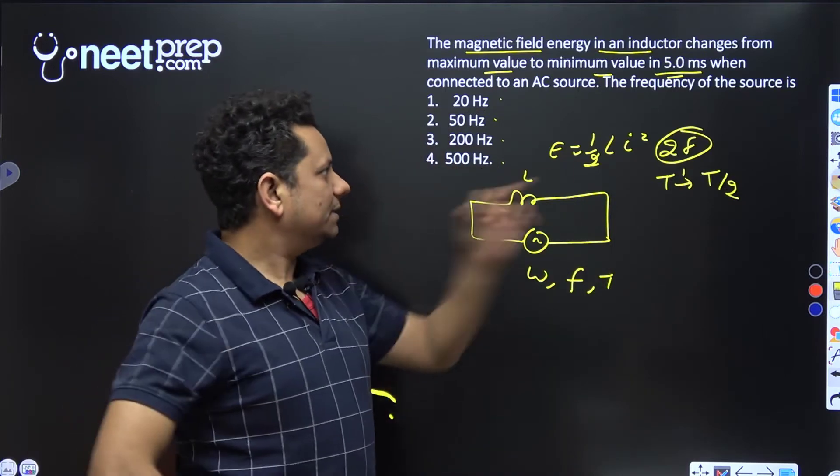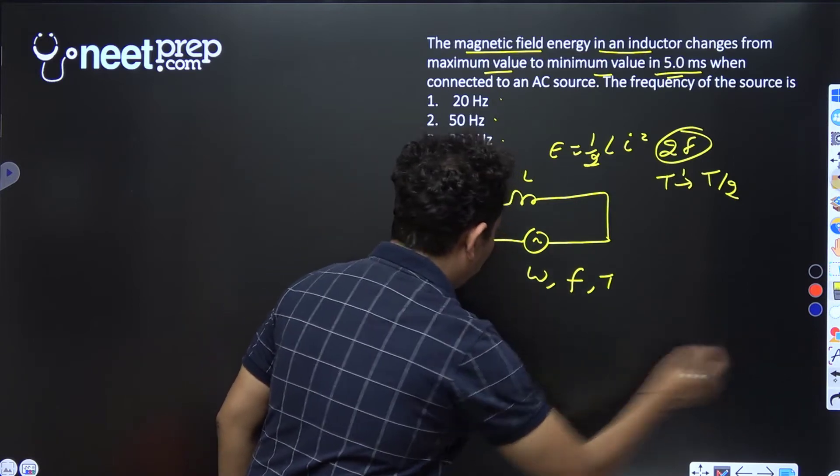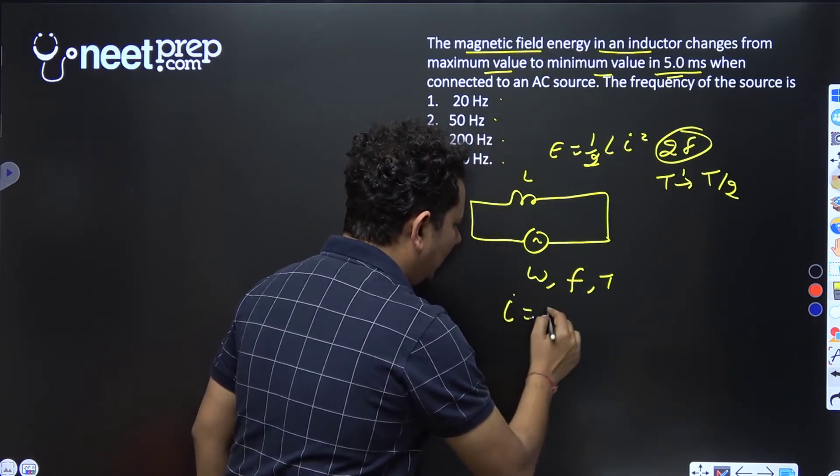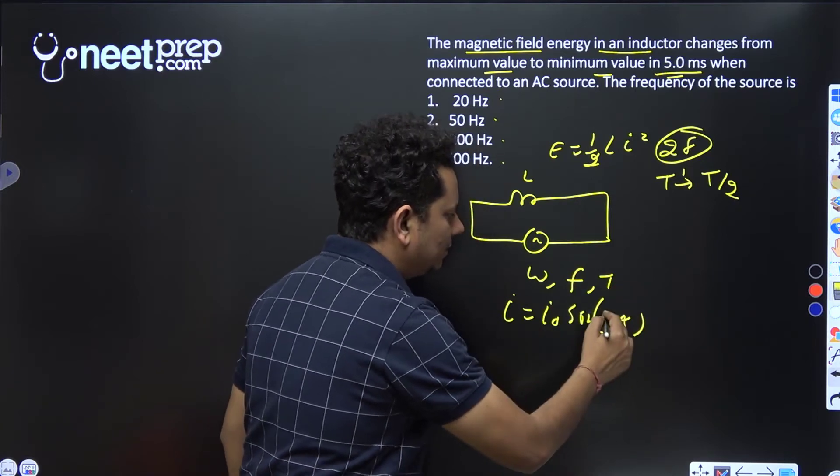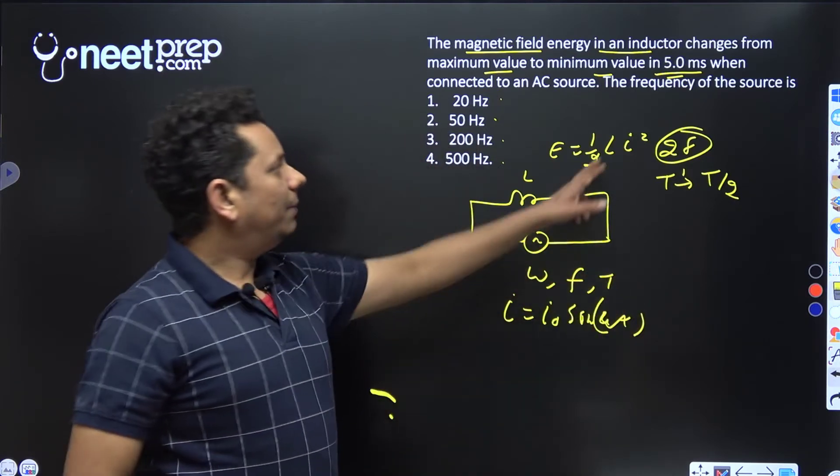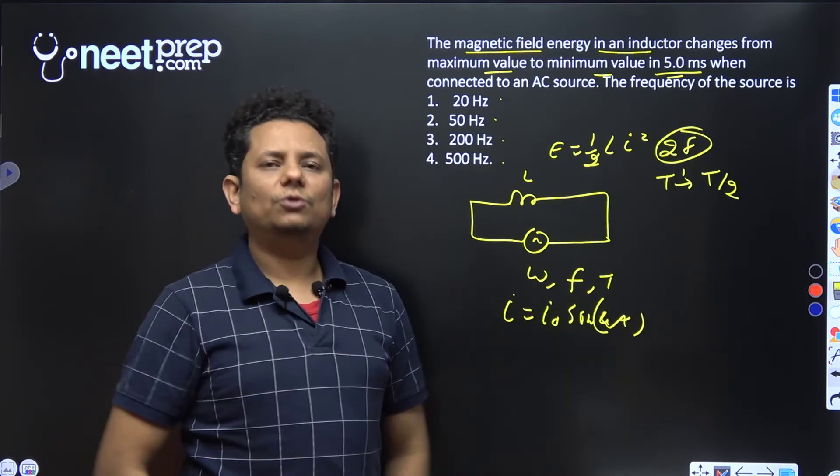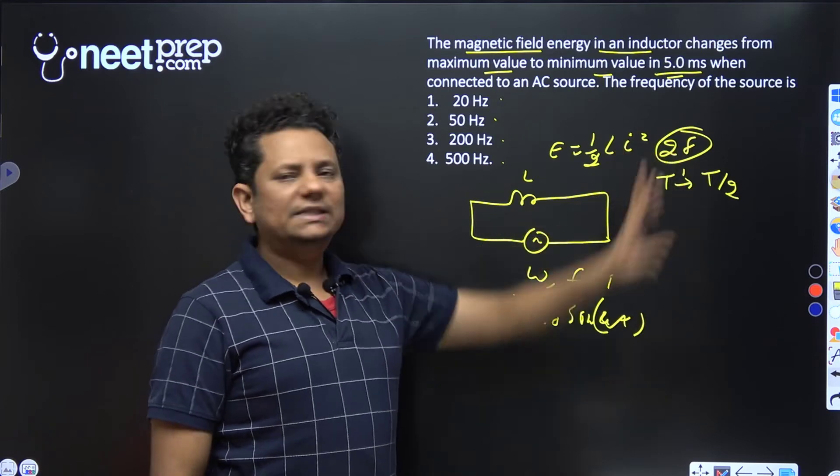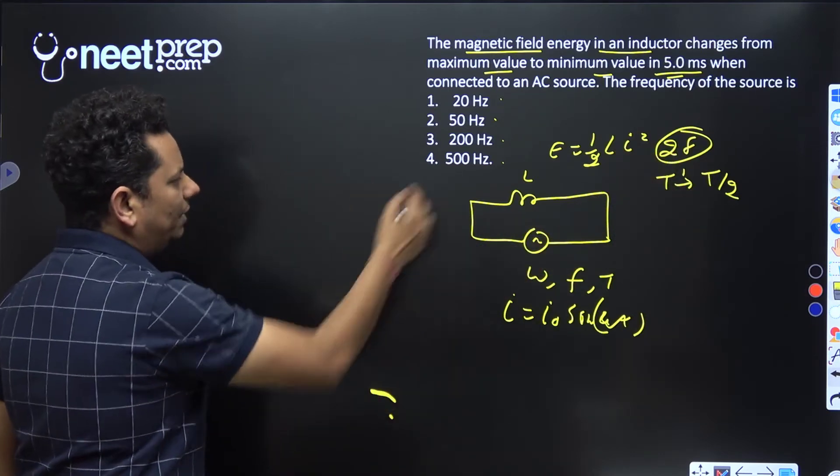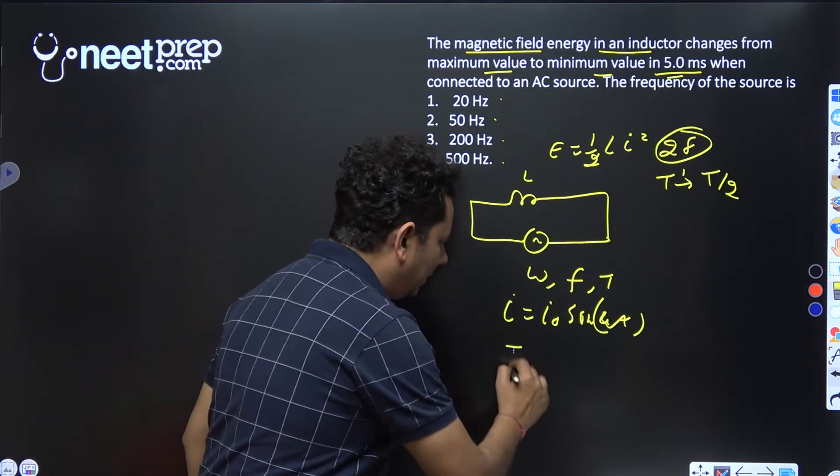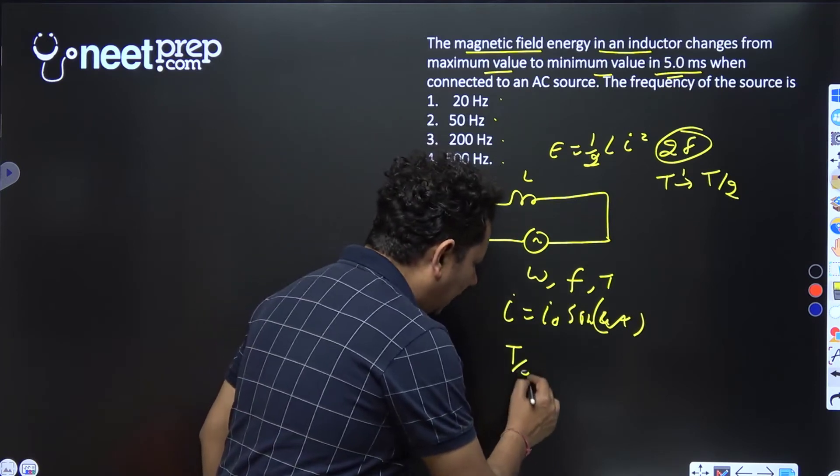The source current is I = I₀sin(ωt). When we have I², that's sin²(ωt), which equals (1 - cos(2ωt))/2. So the frequency of I² is twice the original, or 2f, and the time period is T/2.